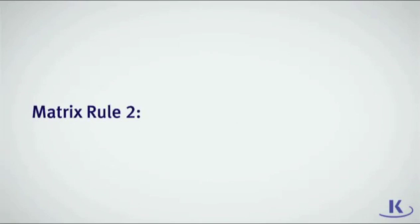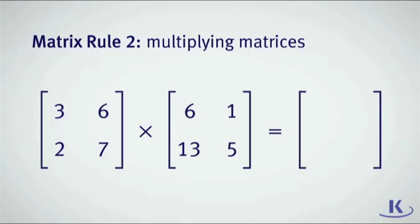Matrix rule 2: Multiplying. You may be asked to multiply matrices. This can be a little more difficult, but if you take it step by step, then it's not so bad. The first matrix is 2 by 2, and the second matrix is also a 2 by 2.